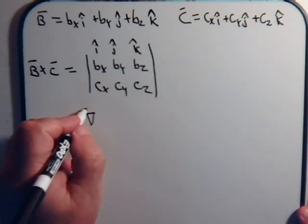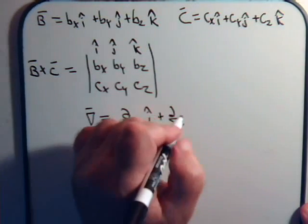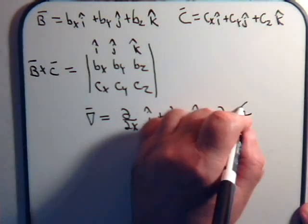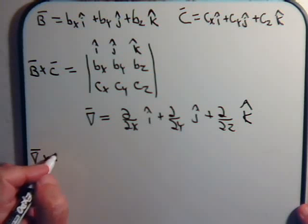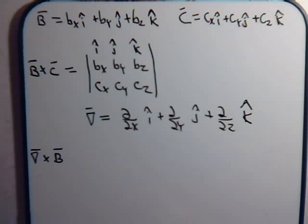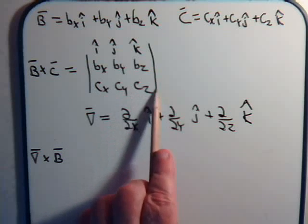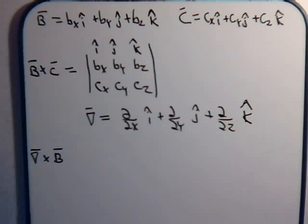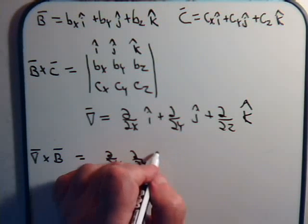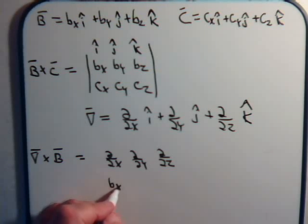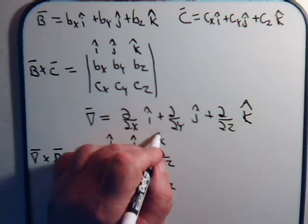So if we have the del operator and consider it as an independent vector in its own right, what happens if we take the cross product of this with vector B? In our matrix definition, the components of the first vector are written across the top and the components of the second vector follow in the next line. So this gives us a matrix with i, j, k in the first row; partial with respect to x, y, and z in the second row; and B sub x, B sub y, B sub z in the third row.